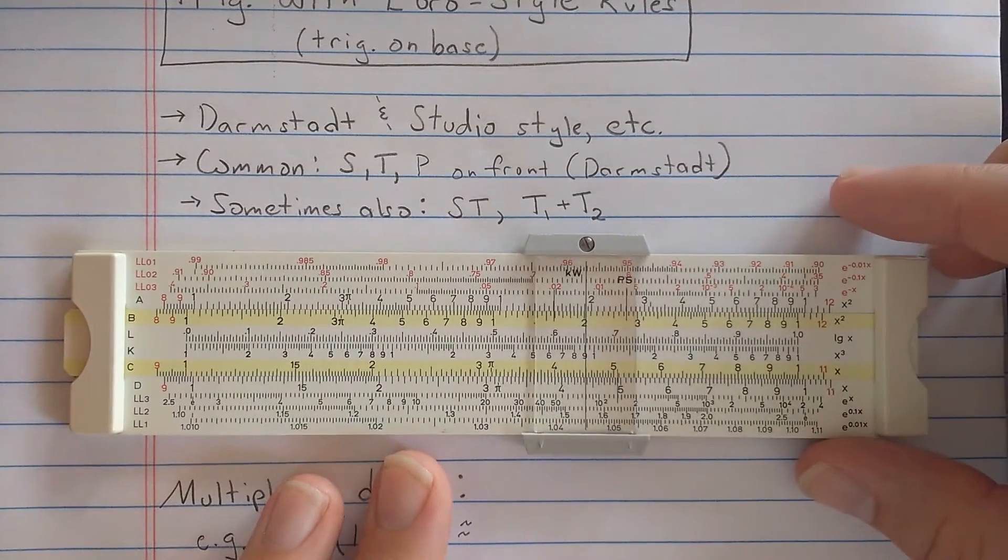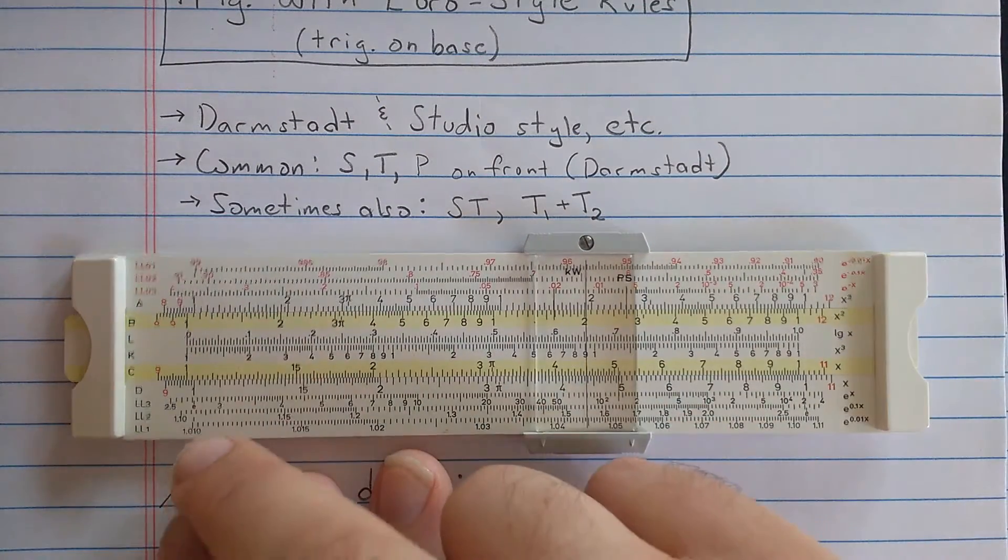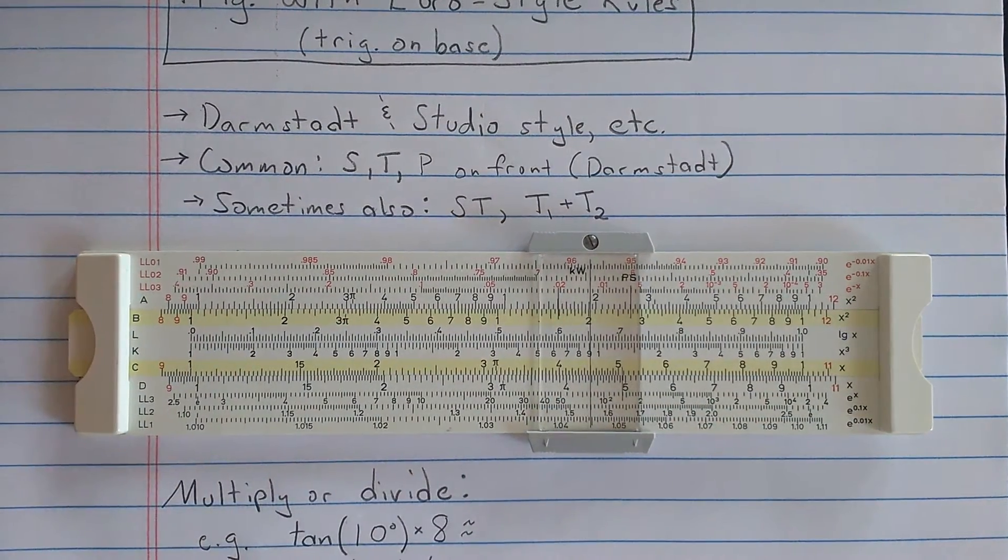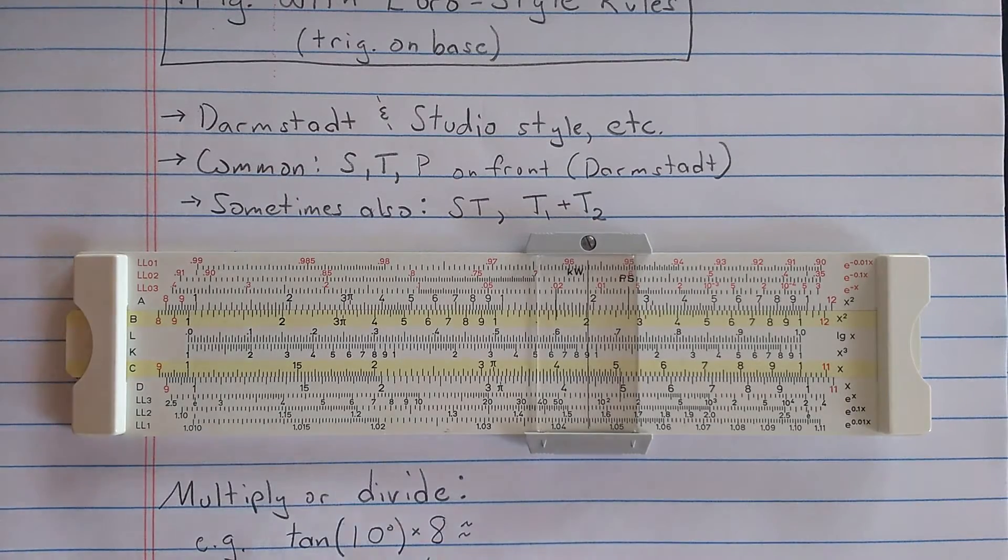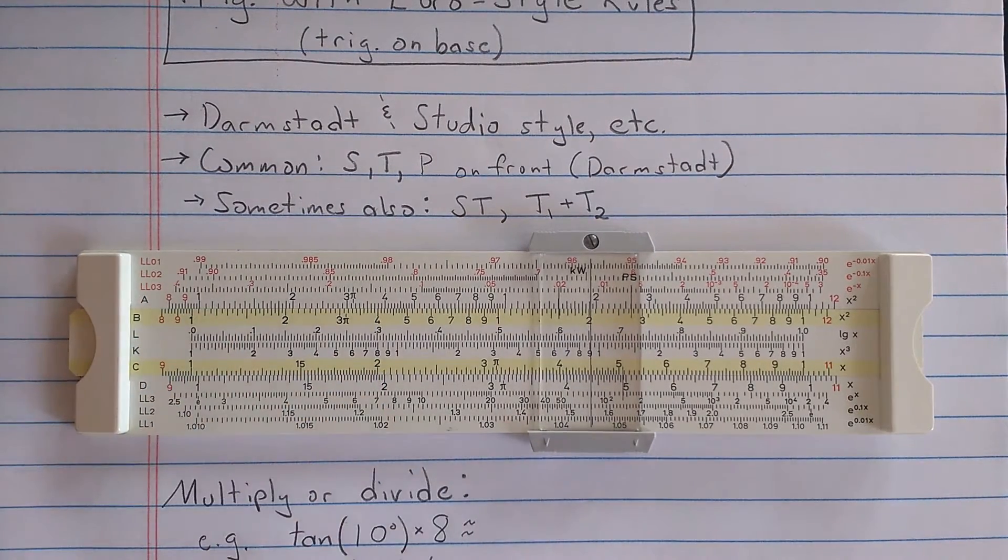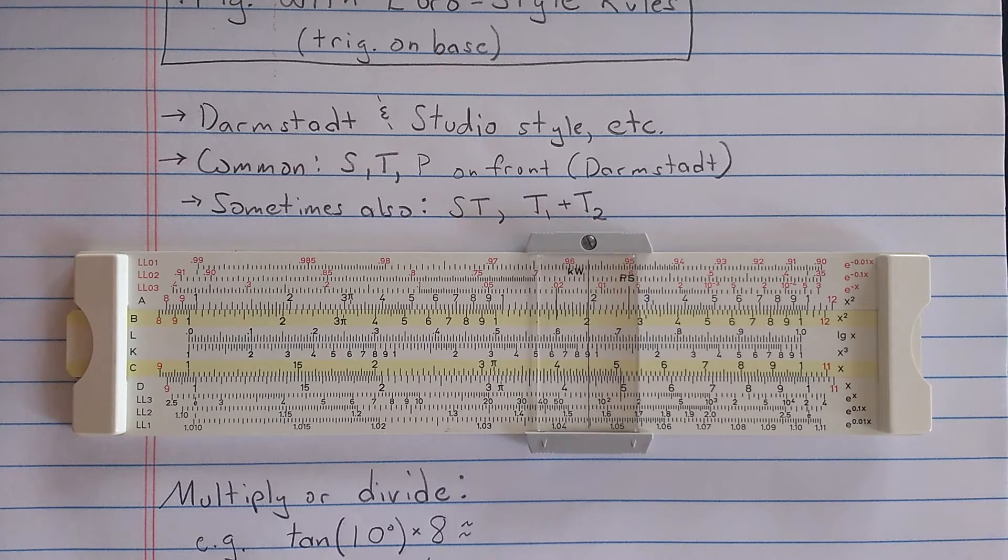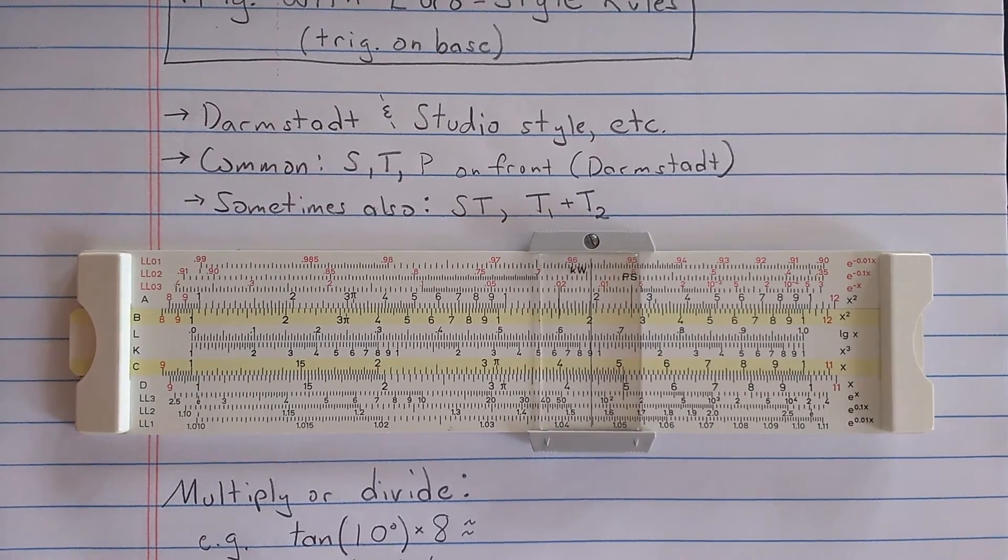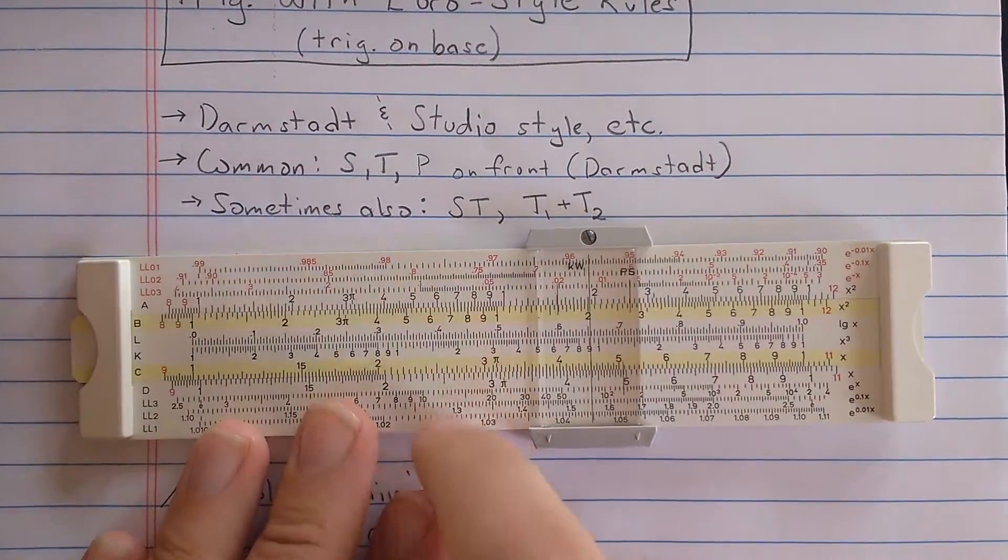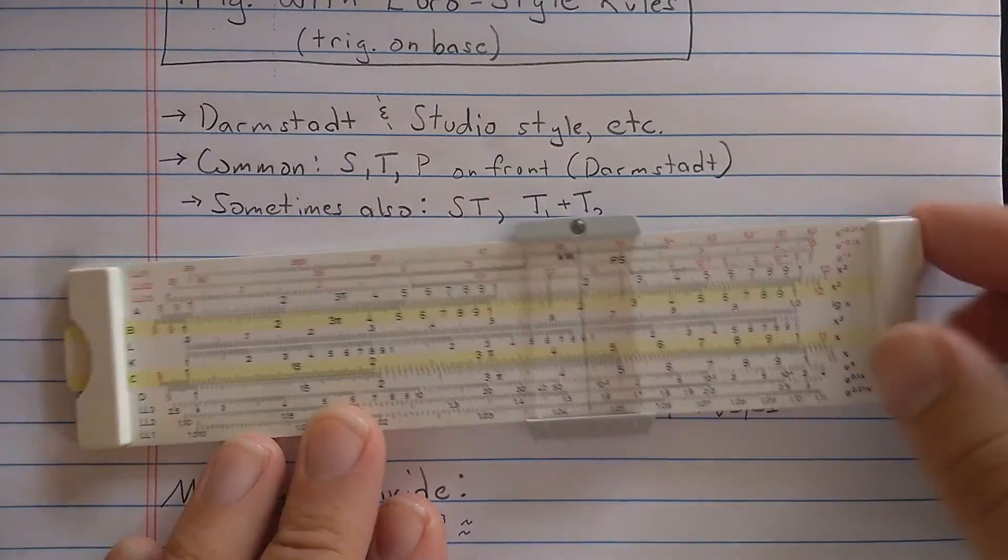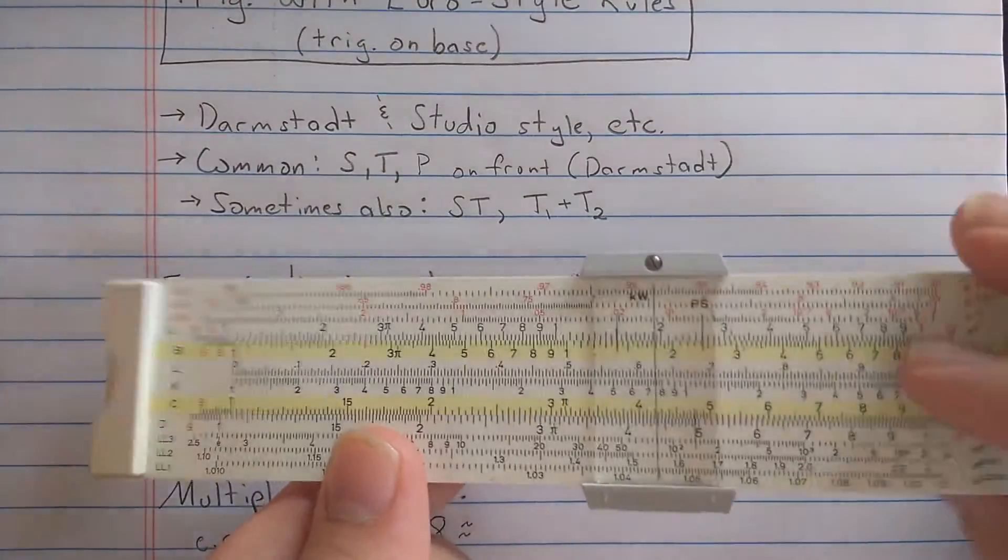You just want to see the back of the rule here. There are two sets of three log-log scales, and the back of this is essentially kind of a Mannheim layout with A, B, C, D. But with the log-log scale, since you have C here, you can use the log-log scales as I did in the other video.